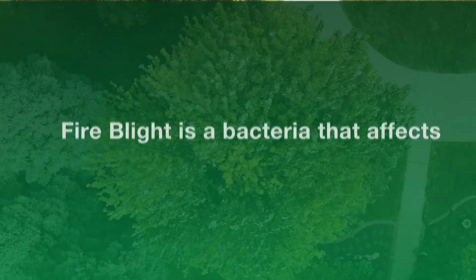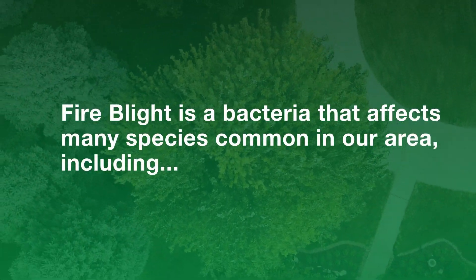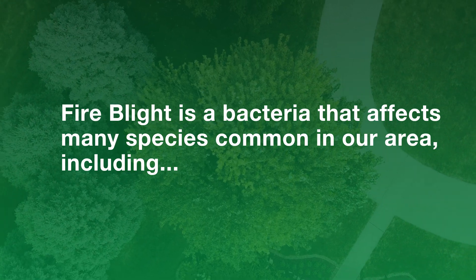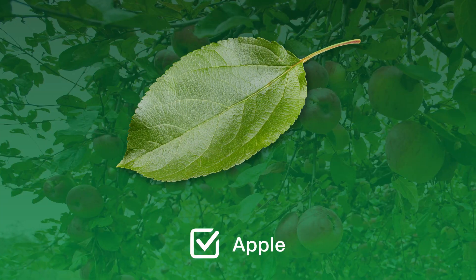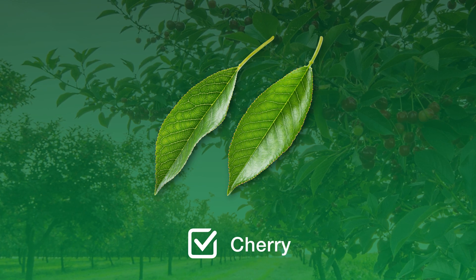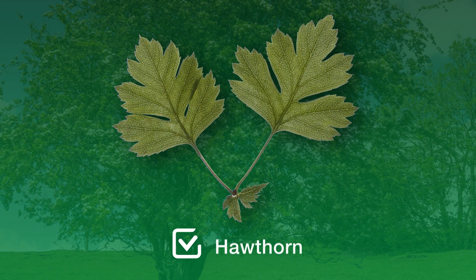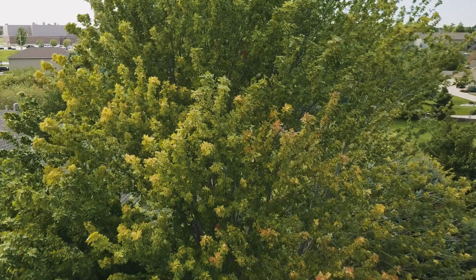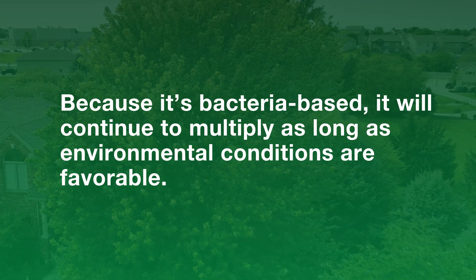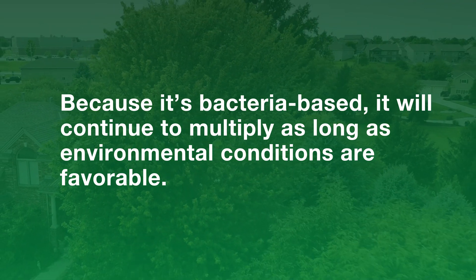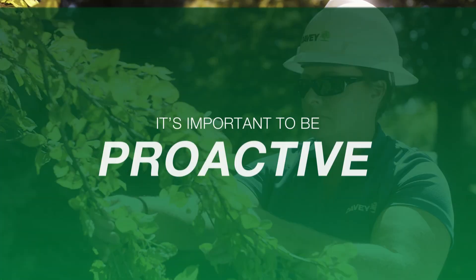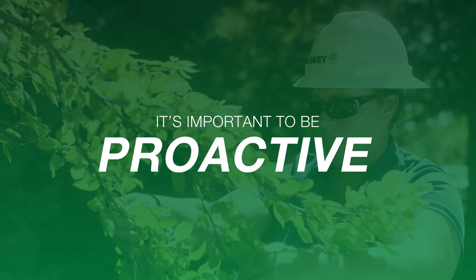Fire blight is a bacteria that affects many species common in our area, including apple, pear, cherry, and hawthorn. Because it's bacteria-based, it will continue to multiply as long as environmental conditions are favorable, so it's very important to be proactive.